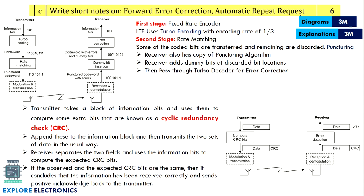Write short notes on forward error correction and automatic repeat request. Since they ask for short notes, brief explanations are sufficient: what is forward error correction and its significance, and what is automatic repeat request and its significance. Supportingly write diagrams for both — even though diagrams are not strictly expected for short notes, including them helps. The diagram carries three marks and explanation carries three marks for a total of six marks; without the diagram you may only get five marks.